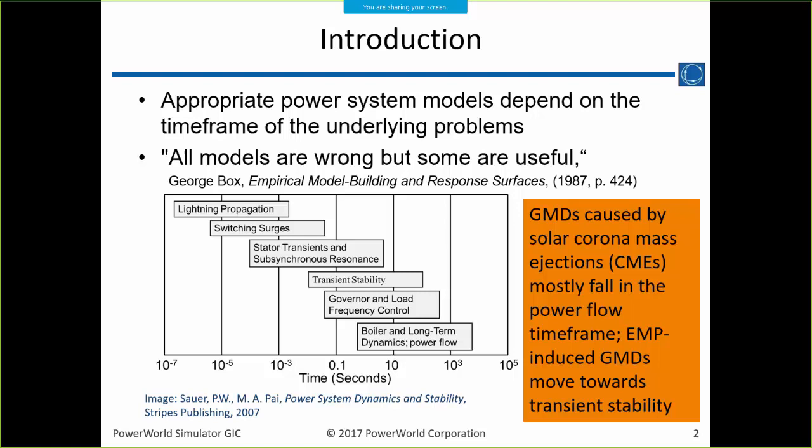GMDs tend to go from minutes to hours to potentially days, so power flow and quasi steady-state voltage stability assessment is a good tool to use. When we start talking about electromagnetic pulses — EMPs — they have much shorter time frames. The one aspect we'll be considering sits right in the transient stability time frame, so we'll be looking at using transient stability to analyze these as well.